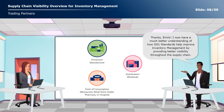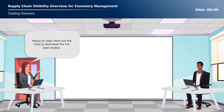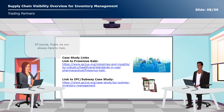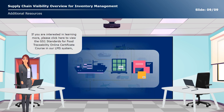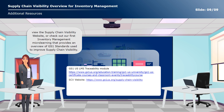Thanks, Emily. I now have a much better understanding of how GS1 standards help improve inventory management by providing better visibility throughout the supply chain. The examples really helped me pull it all together and connect the dots on what we should do next. Where can I read all the details on these case studies? Happy to help! Here are the links to download the full case studies. If you are interested in learning more, please click here to view the GS1 Standards for Food Traceability Online Certificate course in our LMS system, or view the Supply Chain Visibility website.